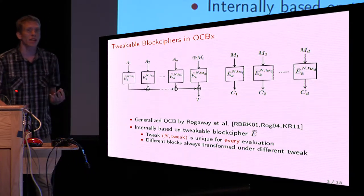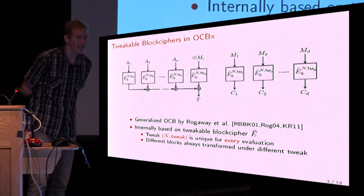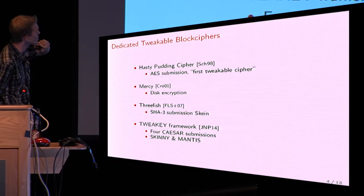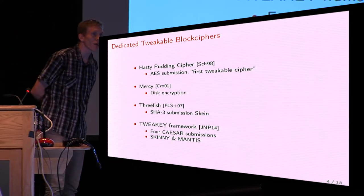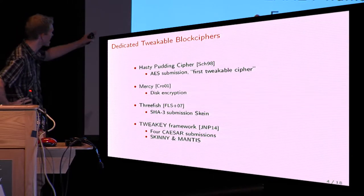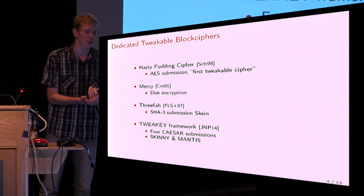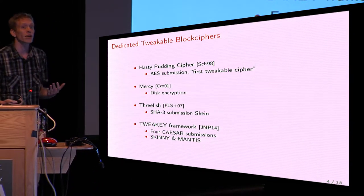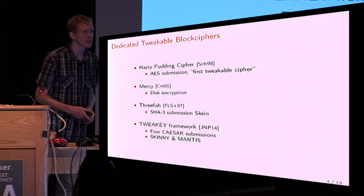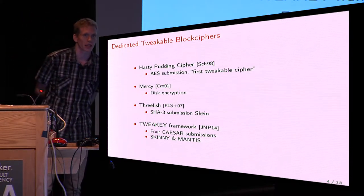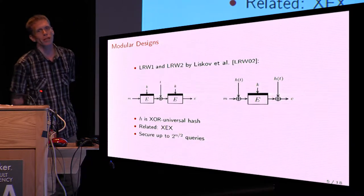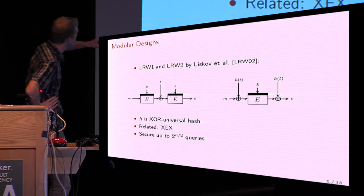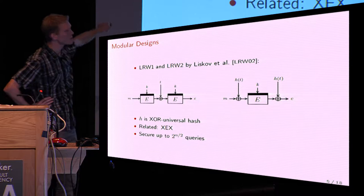The question now is how to design a tweakable block cipher. There is a way of designing it generically. We always refer to the Hasty Pudding cipher as the first tweakable cipher. More interesting right now is the Tweaky framework and Skinny and Mantis from Crypto last year — those are tweakable block cipher designs from scratch. The focus here is on a generic design: suppose you use a block cipher like AES and construct the tweakable block cipher on top of it. The first formalization by Liskov et al. gave two designs, the first being based on two block cipher calls with a tweak XOR in the middle.